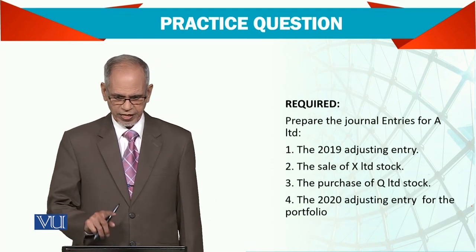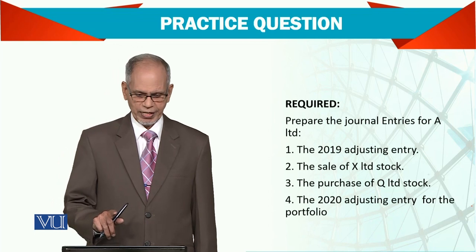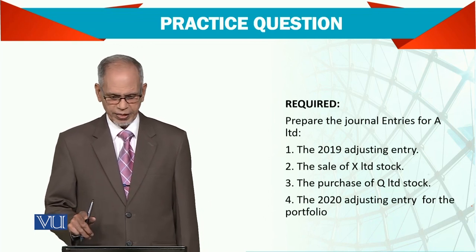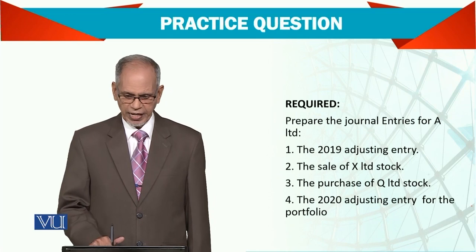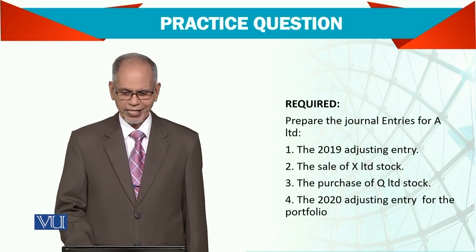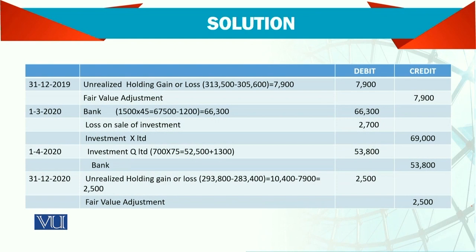Looking at the requirements: the entries required in 2019, the sale of X Limited, the purchase of Q Limited, and the 2020 adjusting entry for the portfolio. There is an unrealized gain or loss. We cannot simply say loss — we use the combined term 'gain or loss' because sometimes it is a gain, sometimes it is a loss, but the account remains the same.